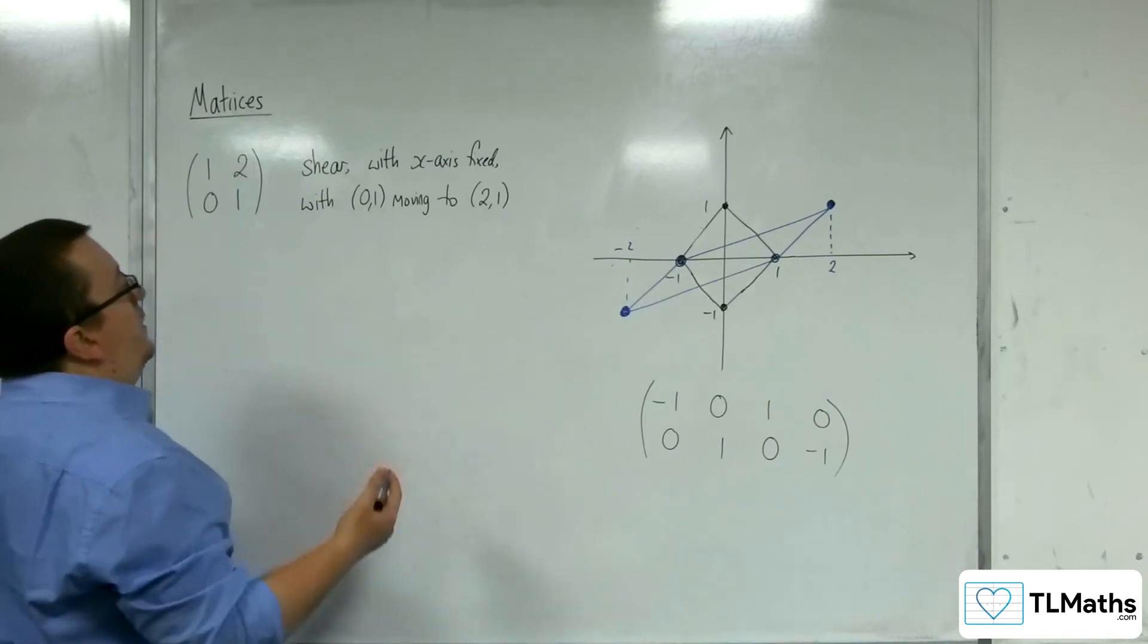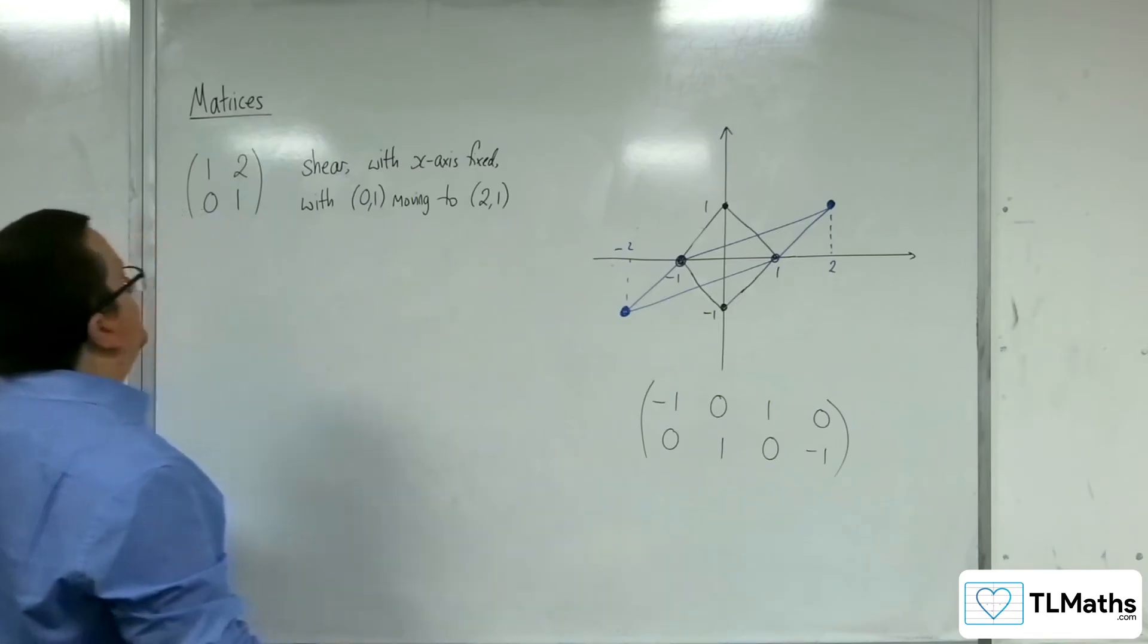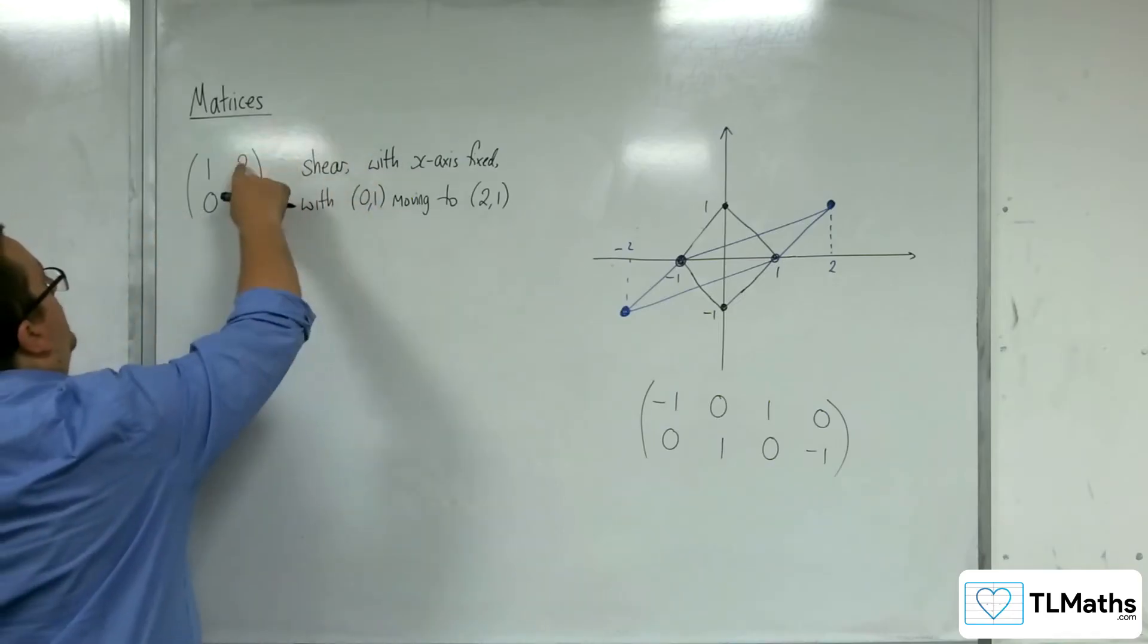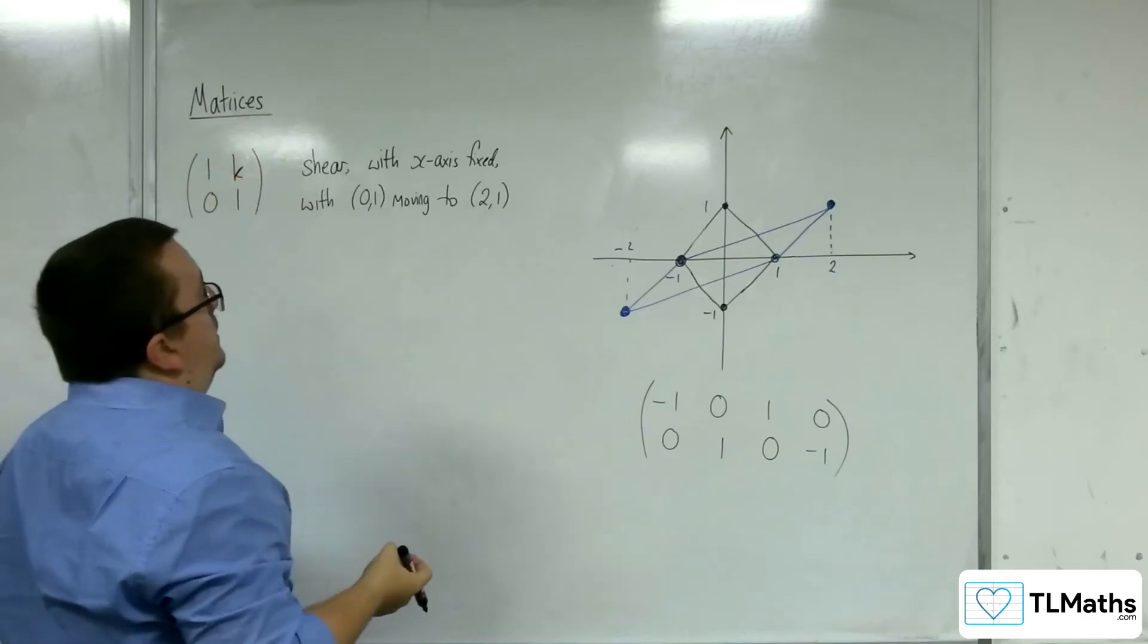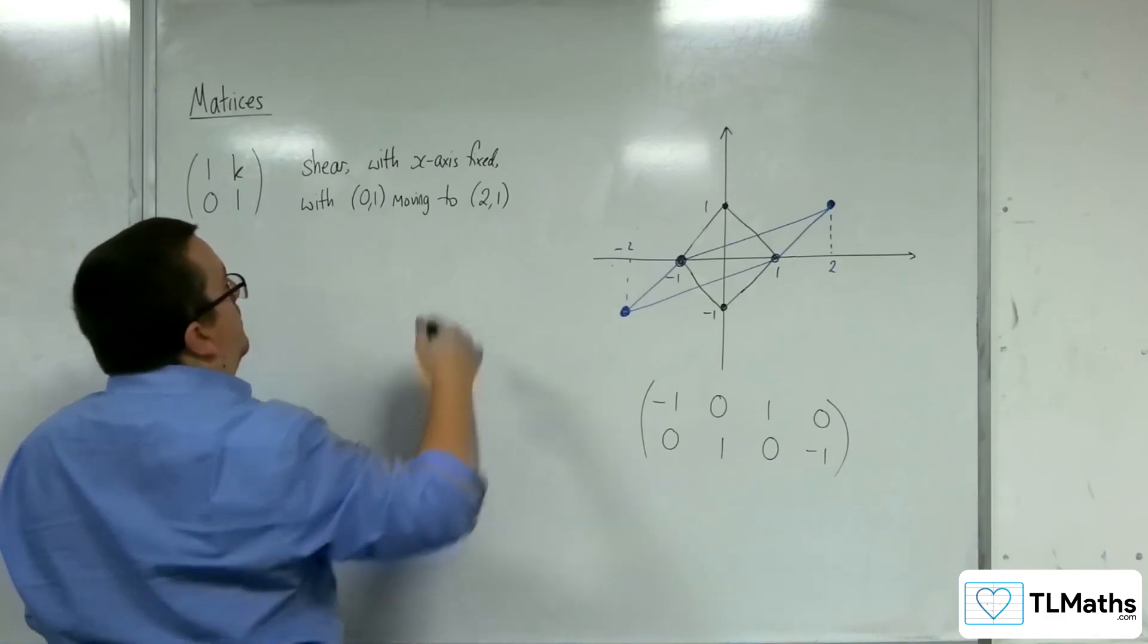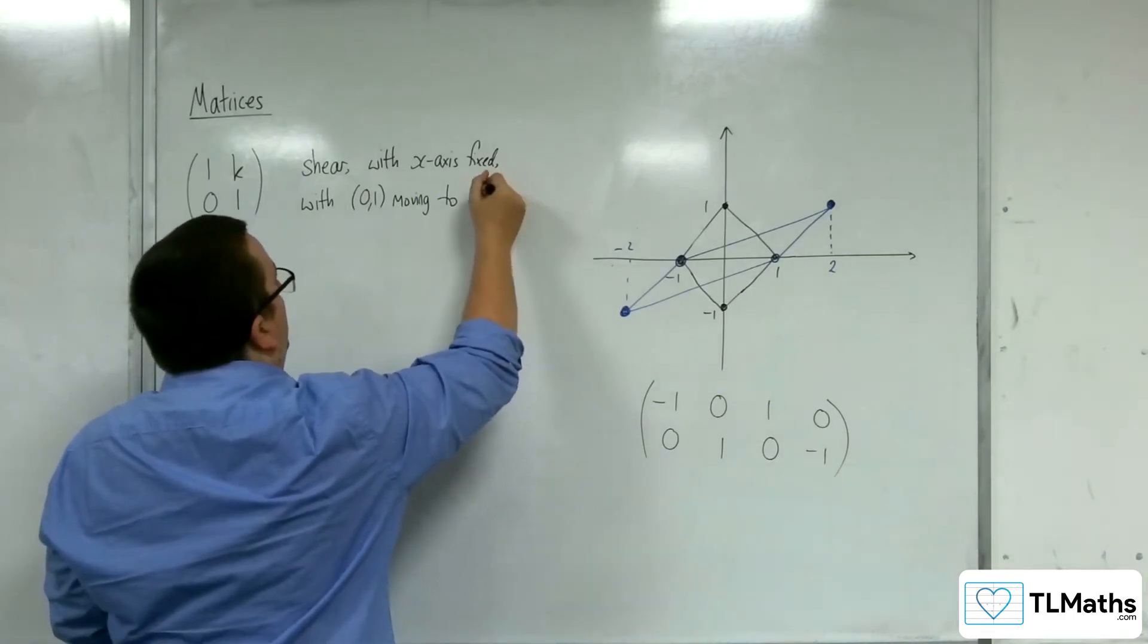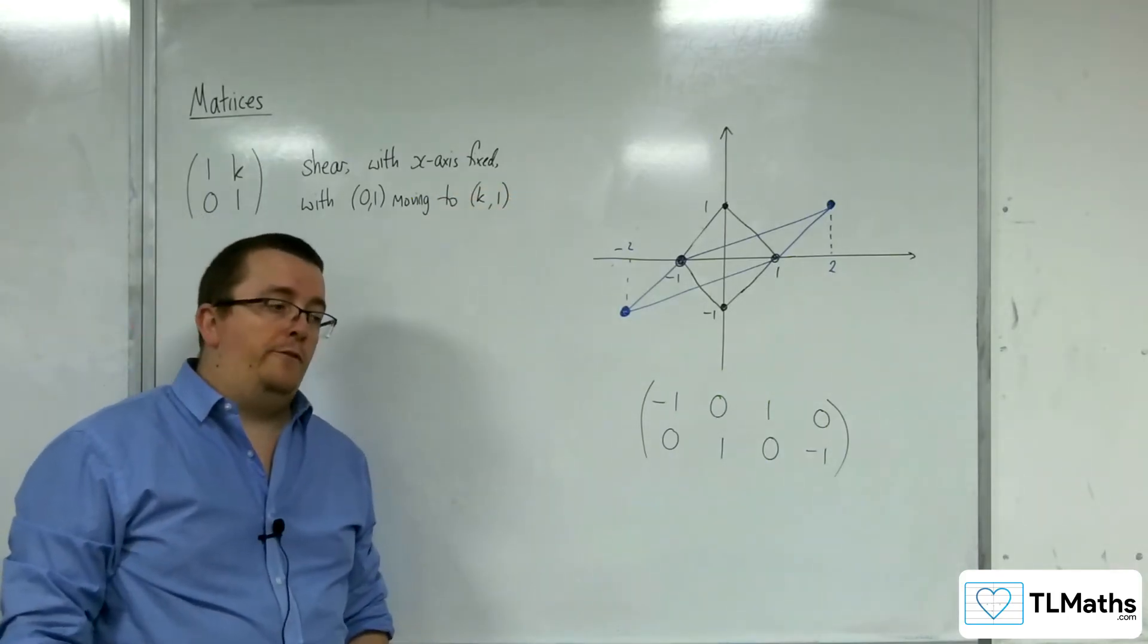So if you were to generalize this, then if this was k, then this would be a shear with the x-axis fixed, with 0, 1 moving to k, 1. That would be the situation that you would have.